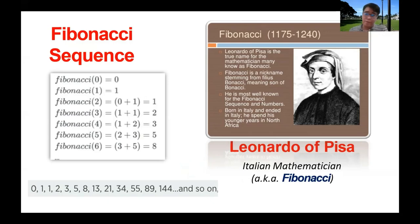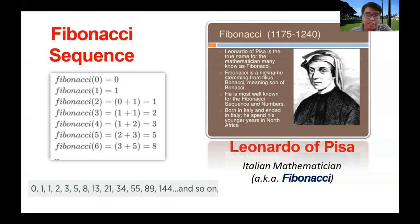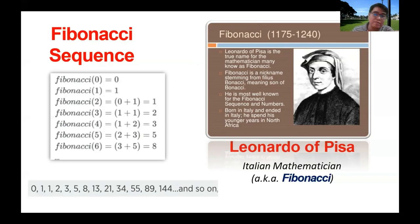The Fibonacci numbers were developed by the Italian mathematician Leonardo Pisa, the true name of the mathematician many know as Fibonacci. Fibonacci is a nickname stemming from Filius Bonacci, meaning son of Bonacci. He is most well known for the Fibonacci sequence and numbers. He was born in Italy, spent his younger years in North Africa, and ended his life in Italy as well.